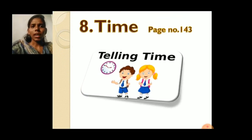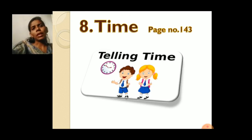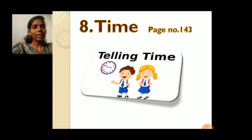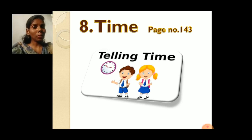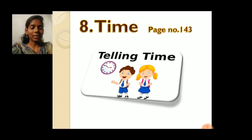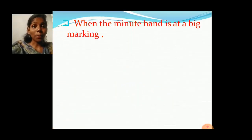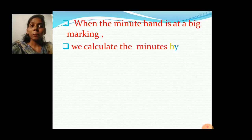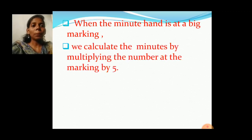Today I'll ask you one question and then we will start today's class. Students, tell me how you calculate the minutes when the minute hand is at a bigger number. We calculate the minutes when the minute hand is at a bigger number — we multiply that number by 5. This we had already learned in last class. When the minute hand is at a big marking, we calculate the minutes by multiplying the number at the marking by 5.